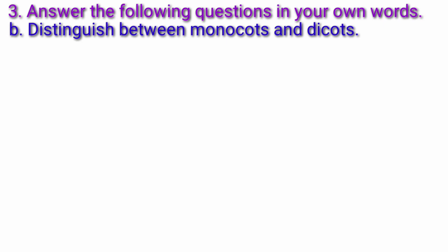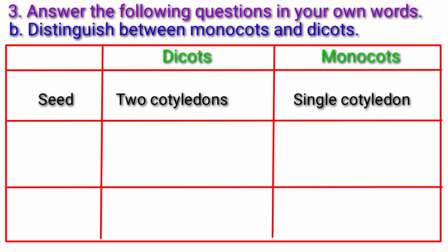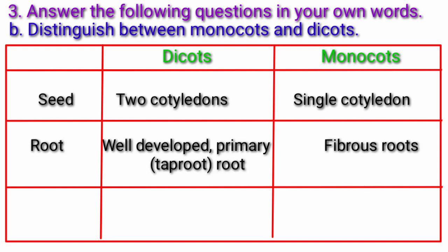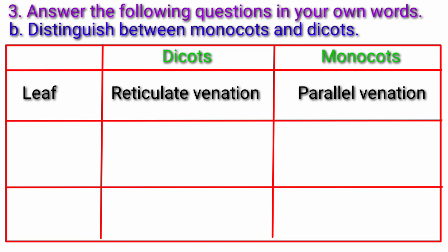Question B: Distinguish between Monocots and Dicots. Answer: Seed — Dicots have two cotyledons; Monocots have a single cotyledon. Root — Dicots have a well-developed primary root; Monocots have fibrous roots. Stem — Dicots have a strong, hard stem, e.g., banyan tree; Monocots have a hollow stem, e.g., bamboo. Disc-like structure e.g., onion. Leaves — Dicots have reticulate venation; Monocots have parallel venation.